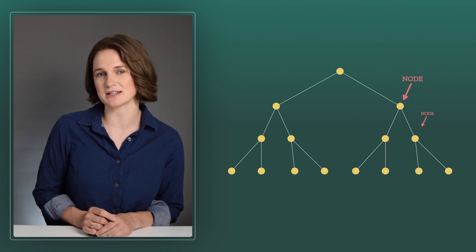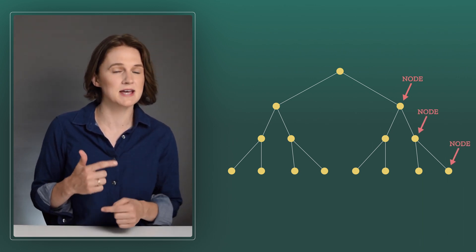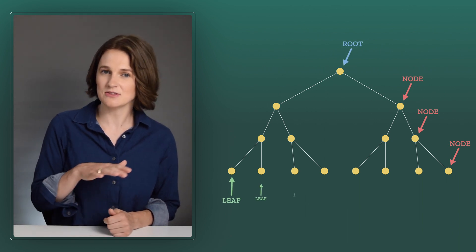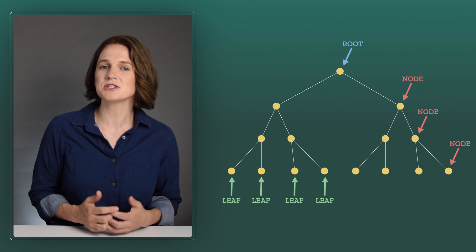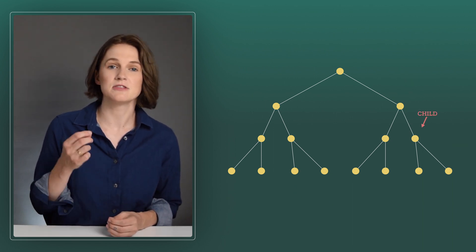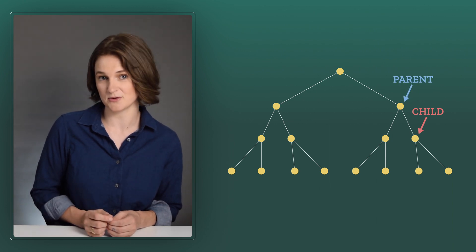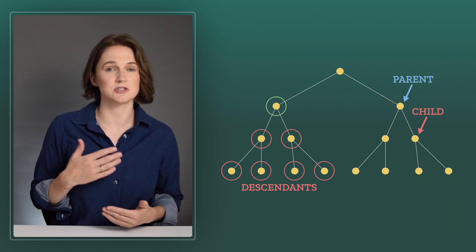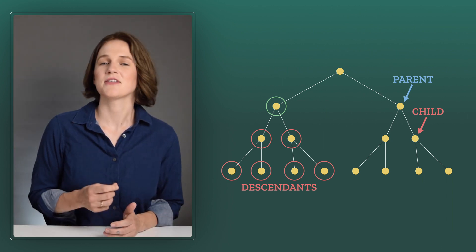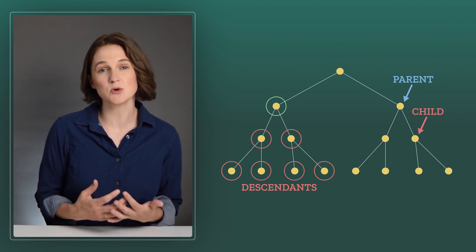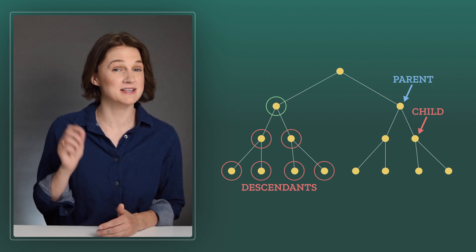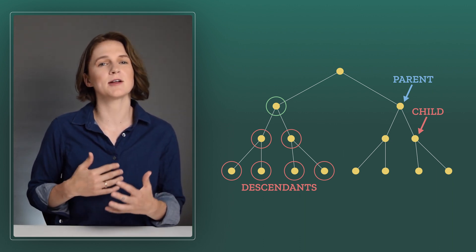Messaging Layer Security, or MLS, is the first standardized multi-party key exchange — a protocol for communication among groups of people or devices. It puts all the participants on a tree, not the botanical kind, but this kind, with nodes connected by paths, which is usually drawn upside down from the plant. This is called the root, and these are called the leaves. This is a binary tree, where every node has at most two children. In fact, in this binary tree, every node has exactly two children. Trees like this have a very regular, simple structure.